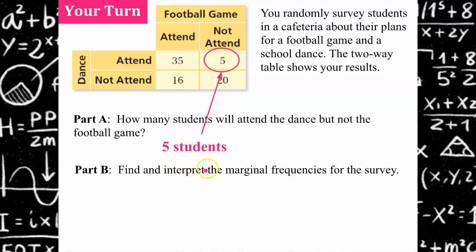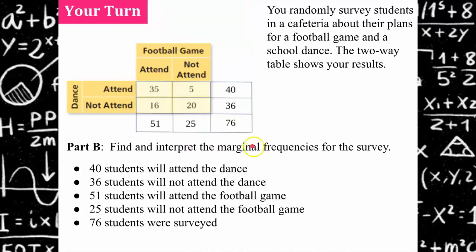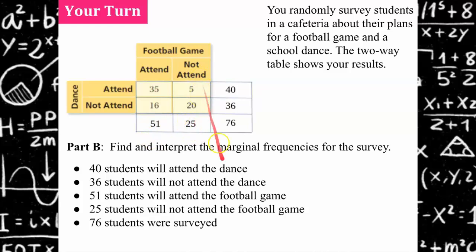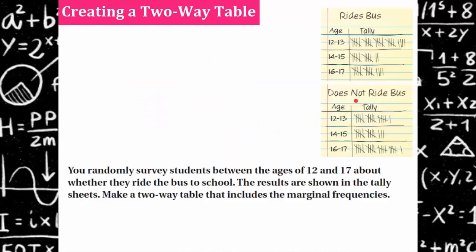Now finding and interpreting the marginal frequencies for the survey. I've added a row and a column and totaled every row and column. Interpreting: 40 students attended the dance, 36 students will not attend the dance, 51 students attended the football game, and 25 students will not attend the football game. A total of 76 students were surveyed.